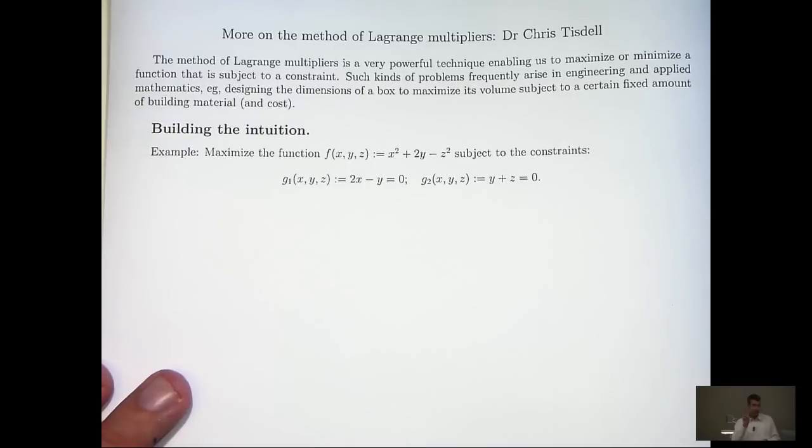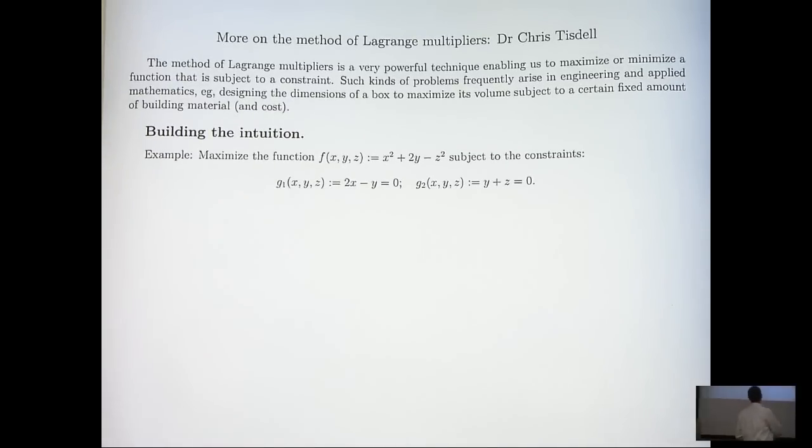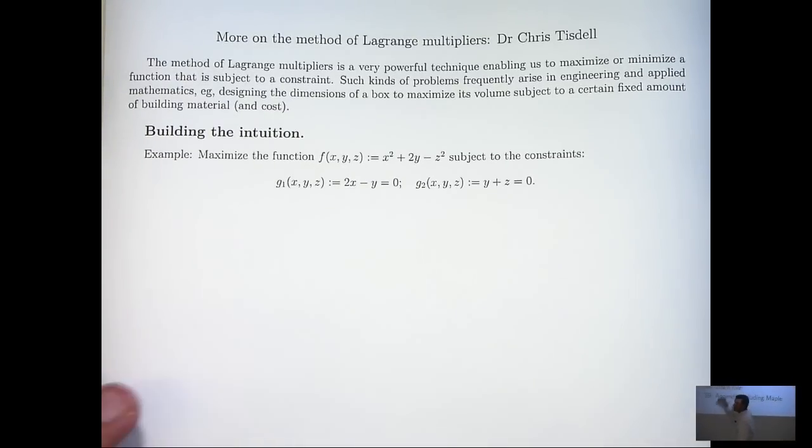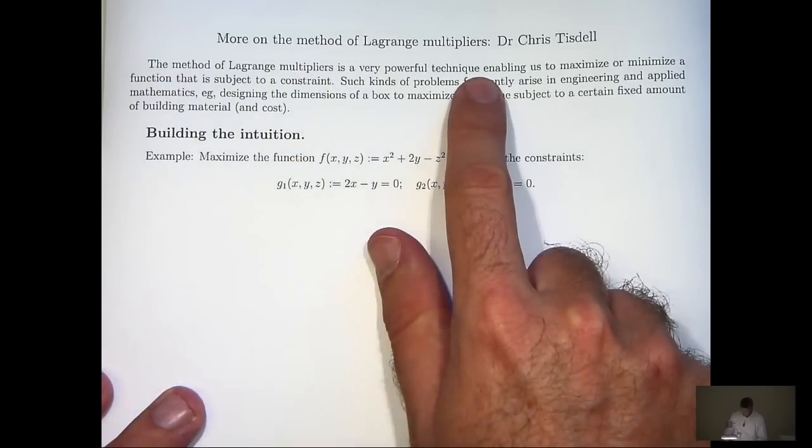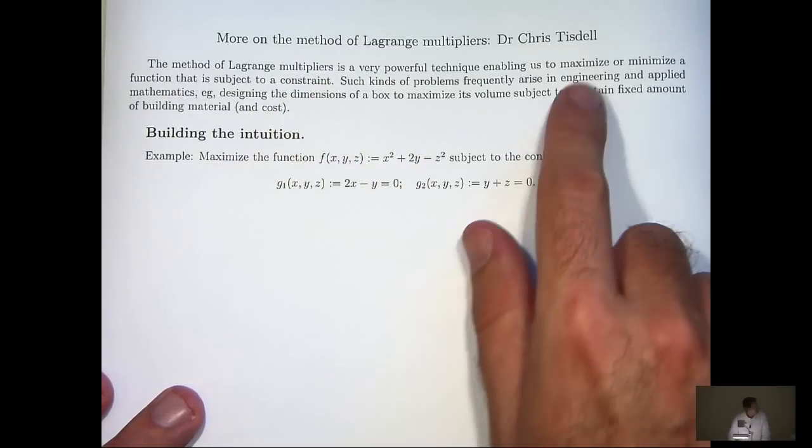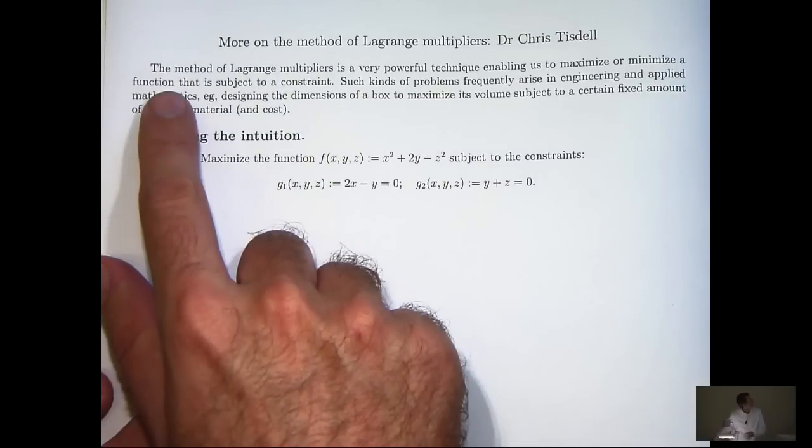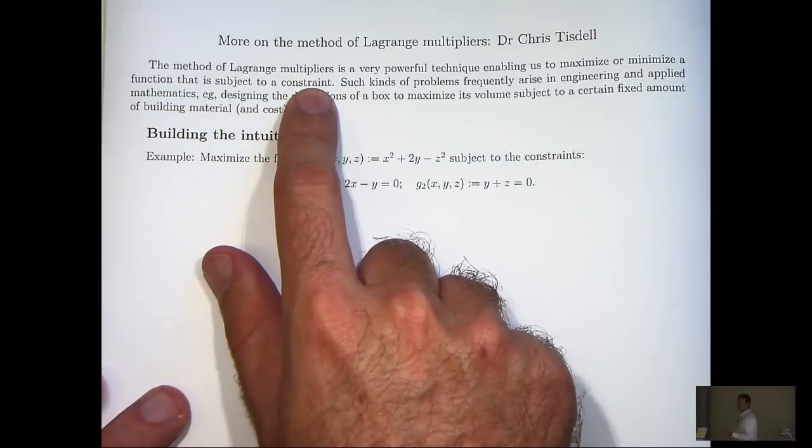But before we get to that, let's motivate the topic. Why are these ideas important? Well, the method of Lagrange multipliers is a very powerful technique and it gives us the power to maximize or minimize a function subject to a constraint or constraints.